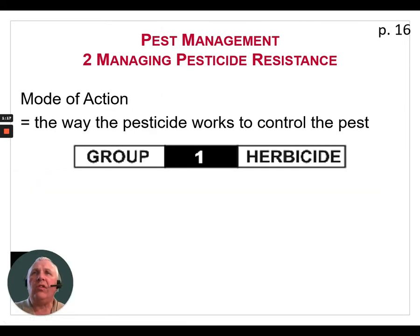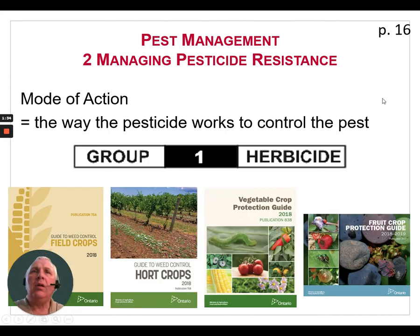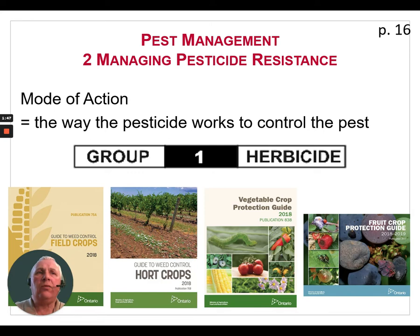We have to consider the mode of action of the pesticide we're using — that is, the way the pesticide works to control that pest. In this diagram you'll see the rectangular symbol where it says 'Group 1 Herbicide,' which is what you'll see on the principal display panel of a pesticide label. We can also find this information through various OMAFRA publications such as the Field Guide to Chemical Weed Control, the Hort Crops Weed Control Book, the Vegetable Crop Protection Guide, and the Fruit Crop Protection Guide. There are lots of ways to find out what mode of action is available to control various pests.